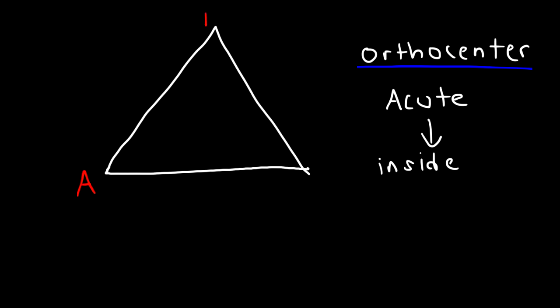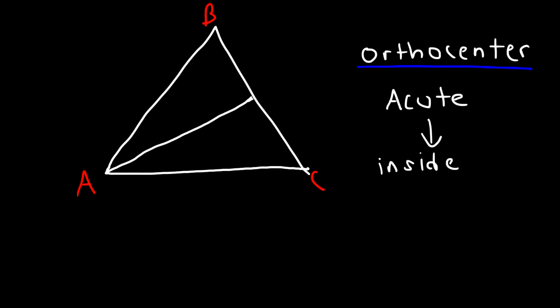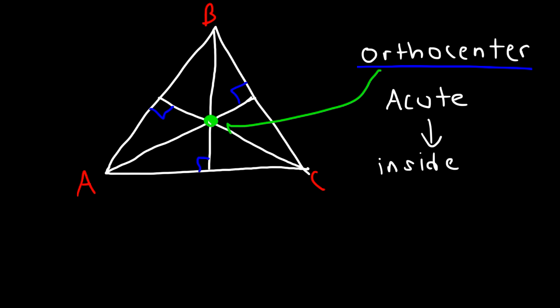The location of the orthocenter can be found by the intersection of the three altitudes. Let's draw an altitude from vertex A to the opposite side BC, perpendicular to it. Then do the same for vertex C and from vertex B to AC. As we can see, the orthocenter is approximately somewhere in this region. So if you have an acute triangle, the orthocenter lies inside of it.